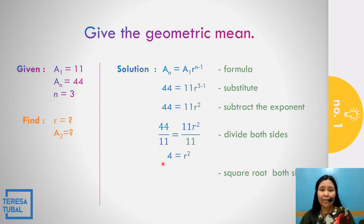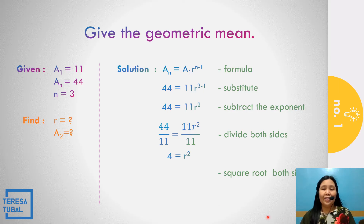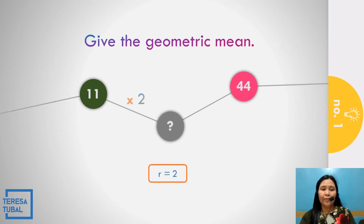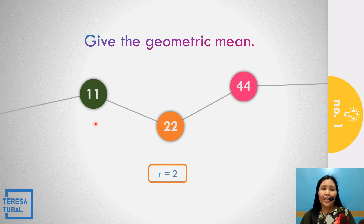Taking the square root of both sides: the square root of 4 equals the square root of r squared. So the value of r is equal to 2, because the square root of 4 is equal to 2. So, 11 times 2 equals 22. The geometric mean between 11 and 44 is equal to 22.